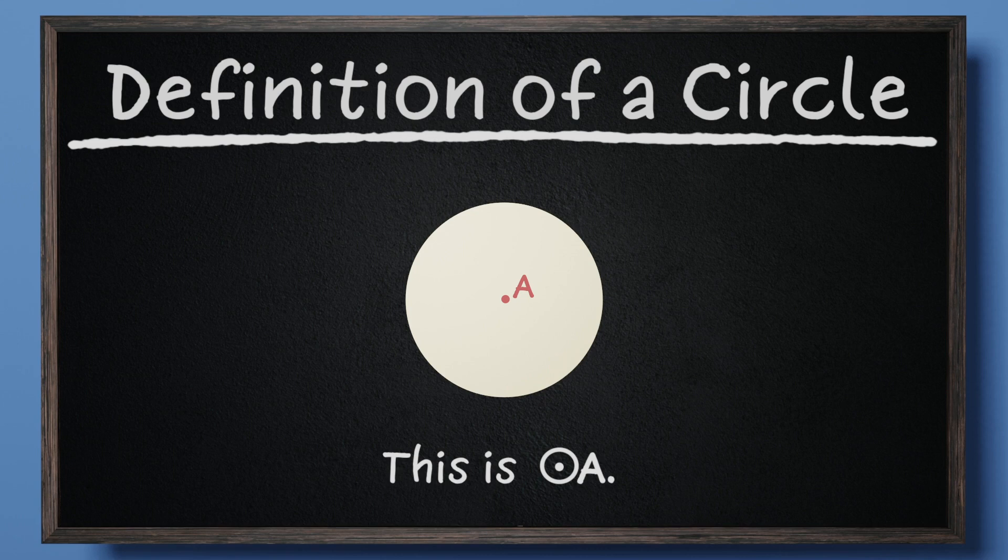This concludes our lesson on the definition of the circle. In the next lesson, we will study two familiar formulas: the formula for the perimeter of the circle, called the circumference, and the formula for the area enclosed by the circle.